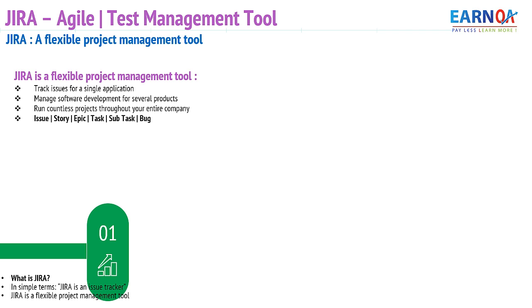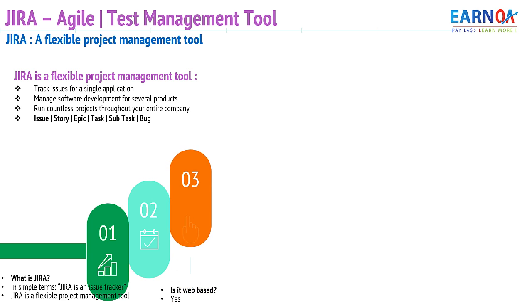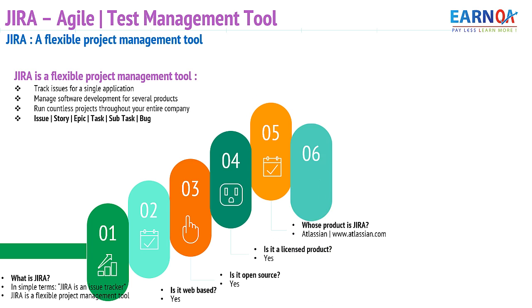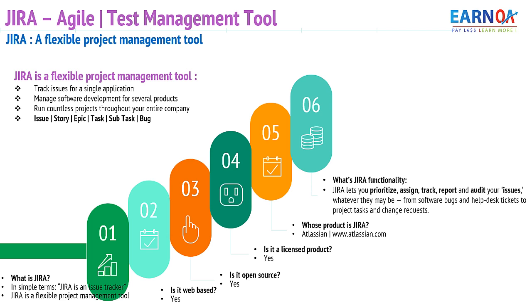So this is what we talked about in the previous session — what exactly is Jira. Jira is an issue tracker and a flexible project management tool. It's a web-based tool and also available on the server side. It's open source and also available as a licensed product, and it helps us to track down each and every implementation with respect to project management. Everything in Jira is known to be an issue.